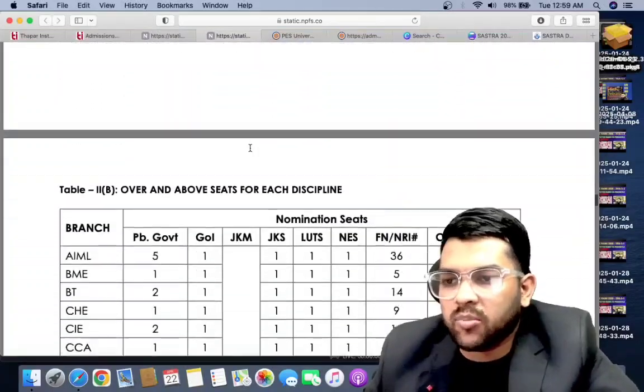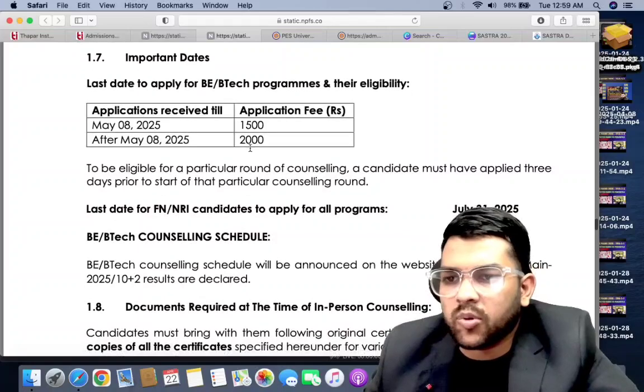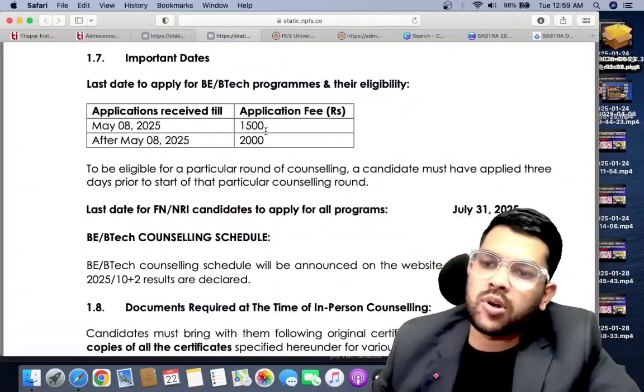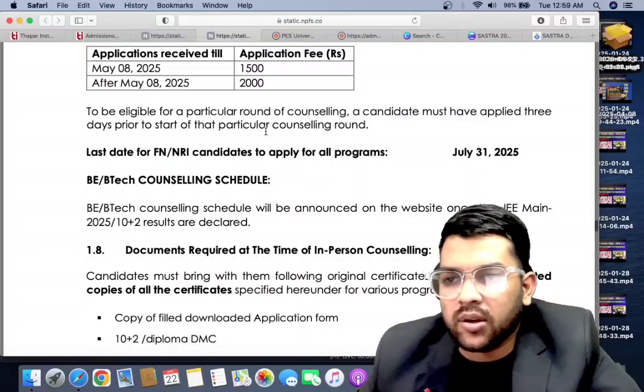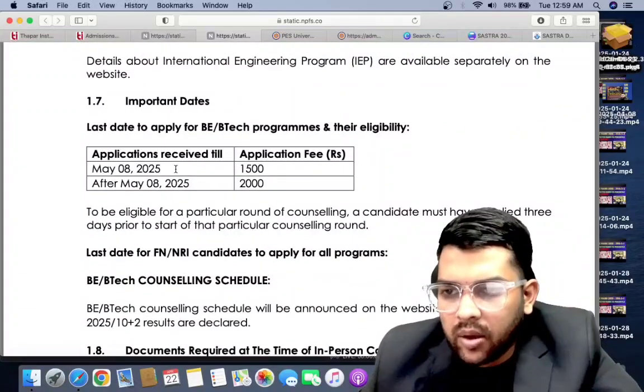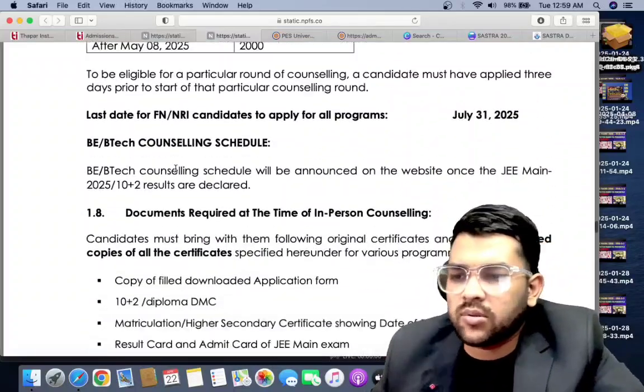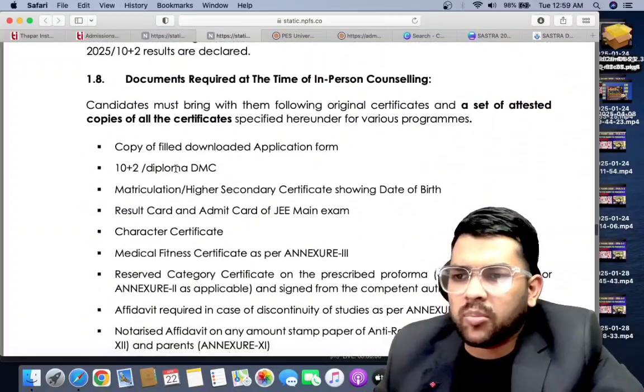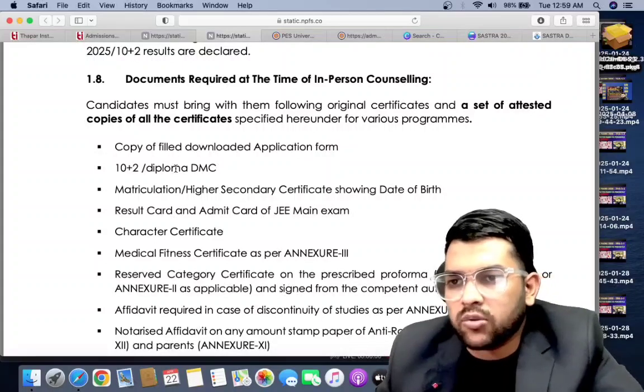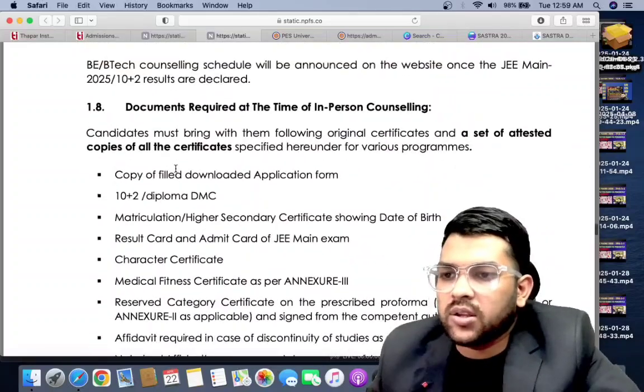Application fee: 1,500 up to 8th May. After 8th May you have to pay 2,000 for the application fee. Last day to apply for BTech program - there is no last day actually, they will take admission up to August also. Whenever you want you can apply, but before the counseling - some counseling round is to take place on 28th, so up to 17th or before that you need to apply.